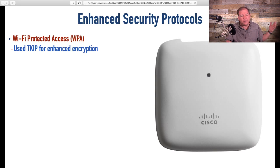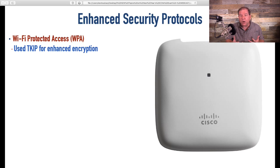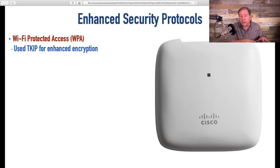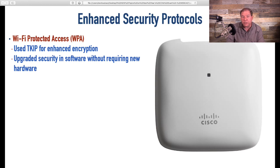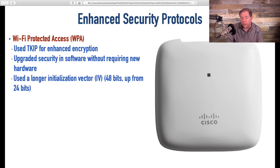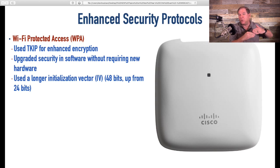You might ask: why didn't we just use AES with WPA? The reason is processing power. While AES is great for security, it's a heavy lift — it takes significant processing power to do all the encryption and decryption. Some wireless devices in the early 2000s would just bog down. So WPA was better than WEP, and didn't put the processor burden that came with AES, allowing us to use existing hardware with just a software upgrade. WPA used a 48-bit initialization vector instead of a 24-bit one — not just twice as secure, but orders of magnitude more difficult to break.